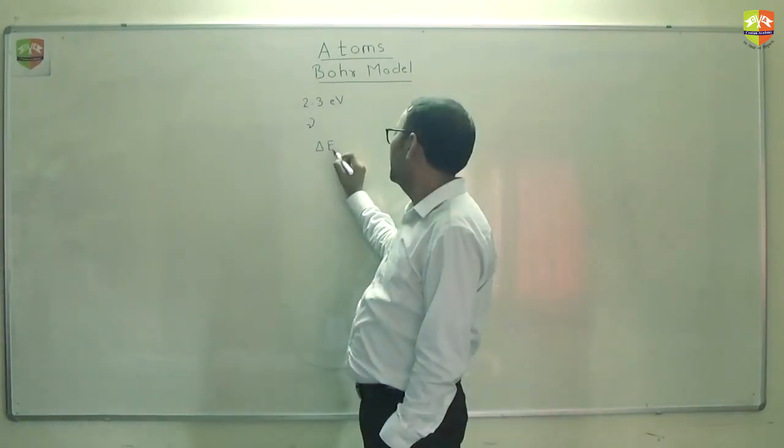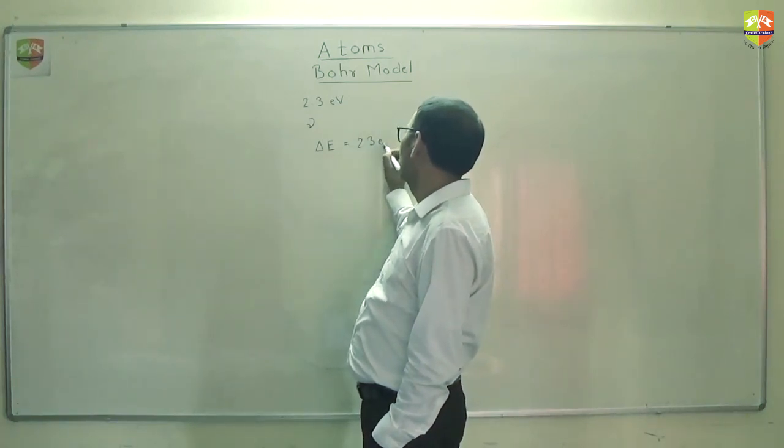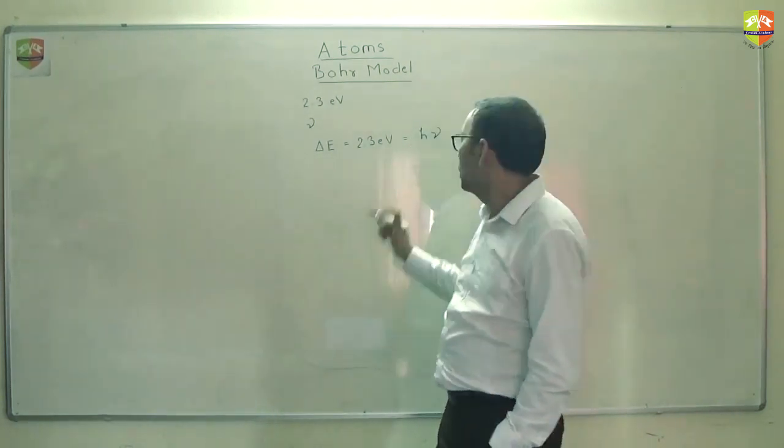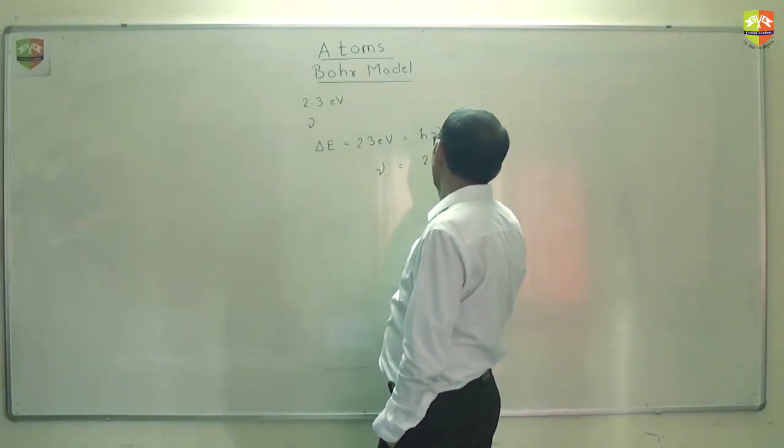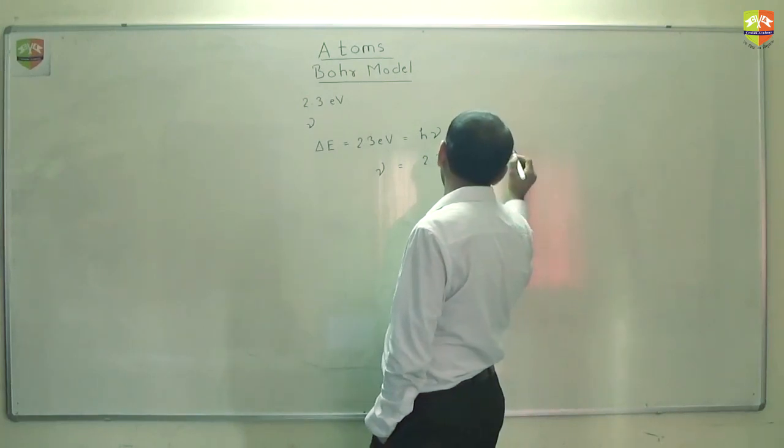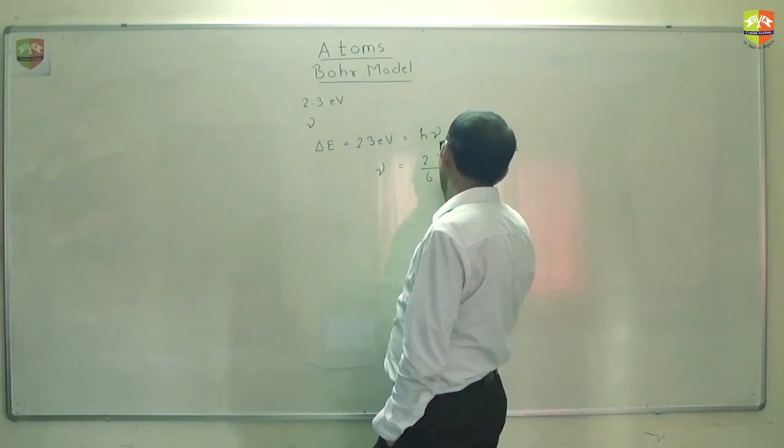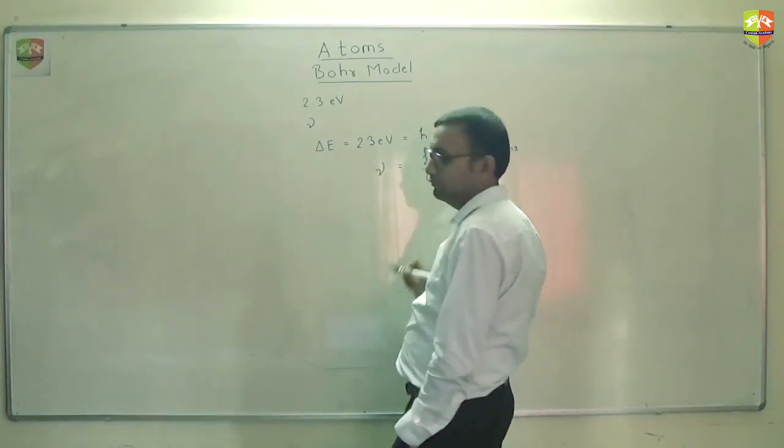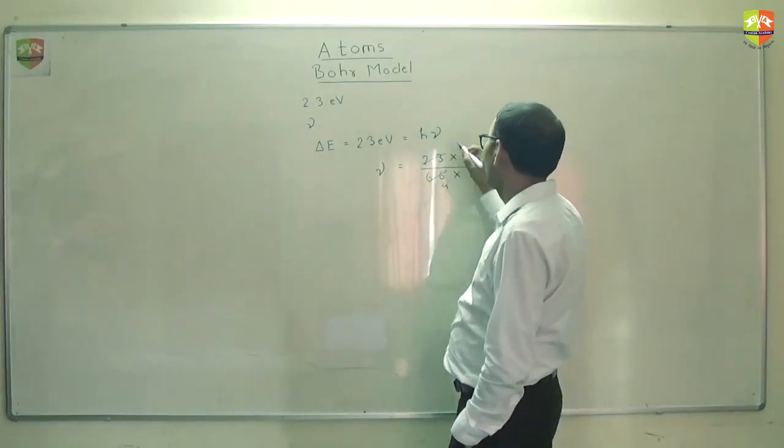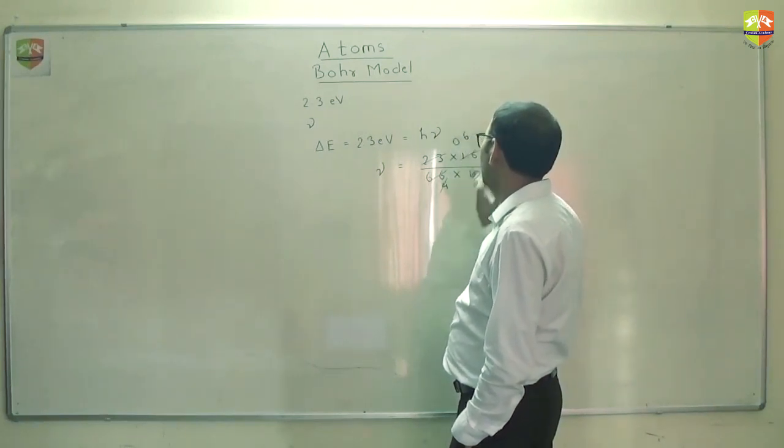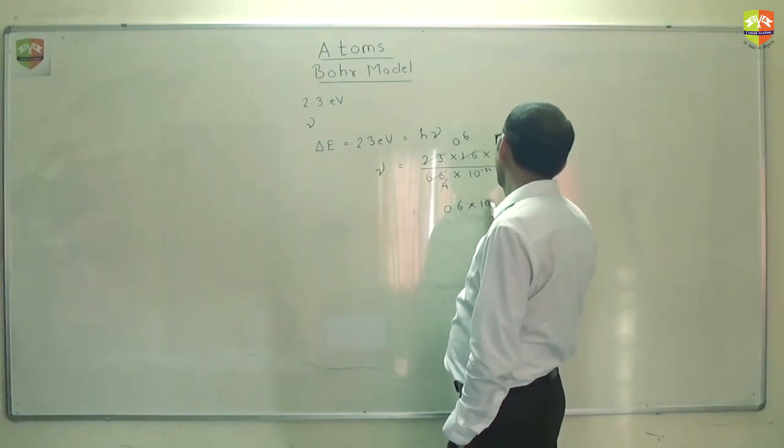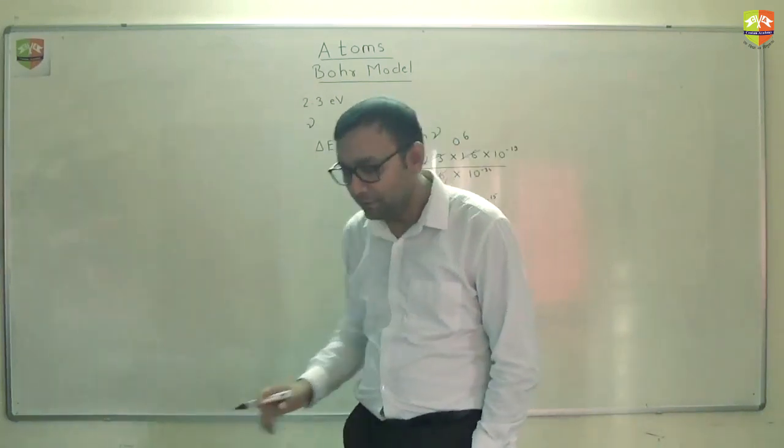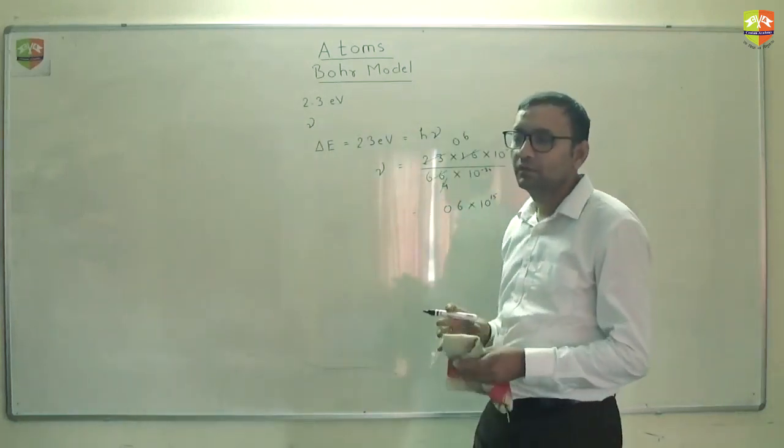mu is asked. Delta E which is equal to 2.3 electron volt. So basically mu is equal to 2.3 into 1.6 times 10 to the power minus 19 divided by 6.6 into 10 raise to the power minus 24. You can roughly make it 4 and you can roughly make it 24. This is 0.6, this is 0.6. So this is 0.6 into 10 raise to power 15. So 6 into 10 raise to power 14 hertz. So this is direct application of the Bohr's atomic model third postulate.